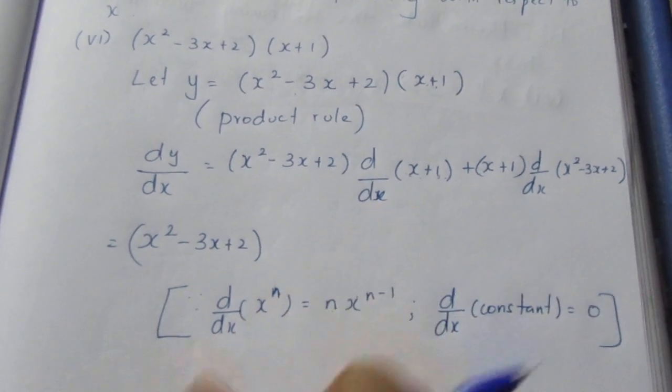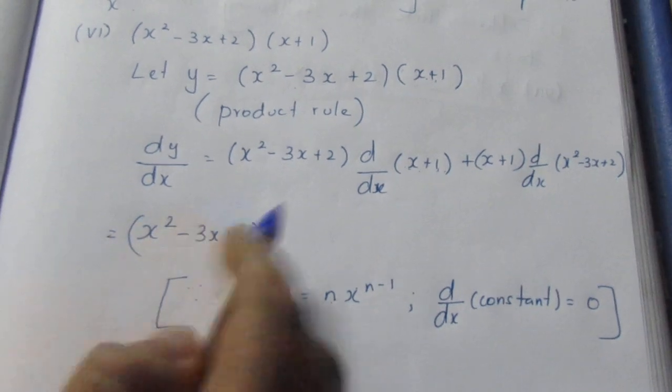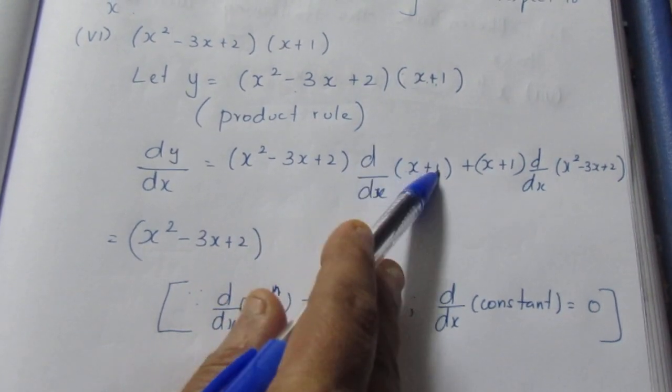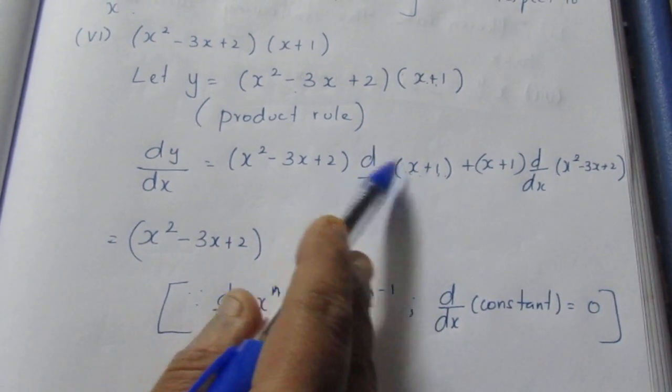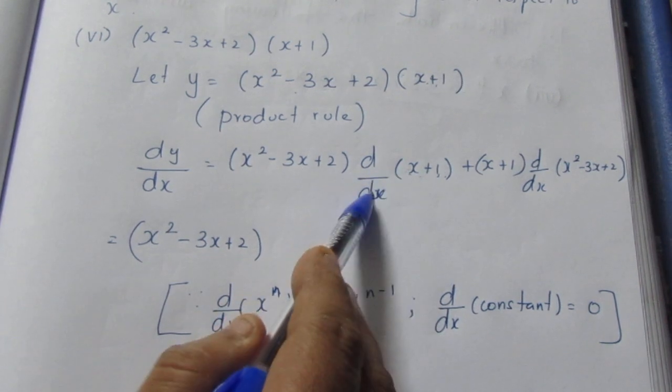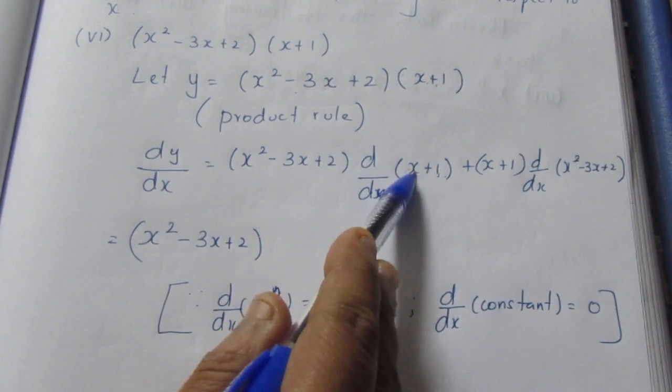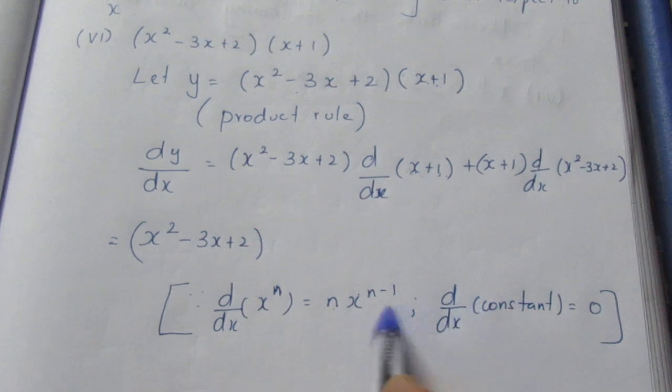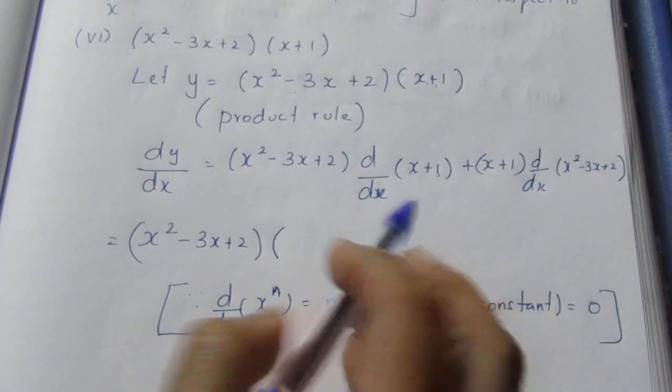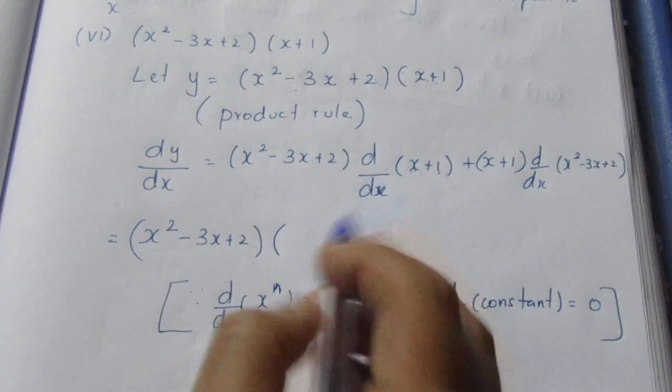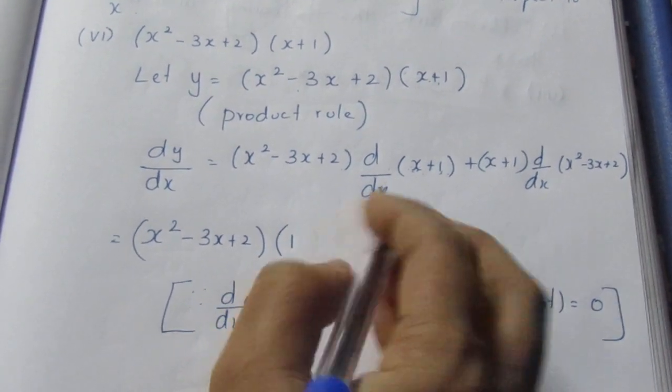We will use the formula d/dx(xⁿ) = nxⁿ⁻¹. For x, we can write it as x¹, so 1 times x⁰ equals 1.